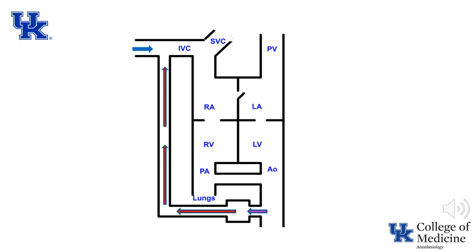Blood from the umbilical vein enters the inferior vena cava, where it joins venous blood from the lower extremities, resulting in a decrease in oxygenation. Blood from the inferior vena cava enters the right atrium, where it is preferentially directed through the foramen ovale into the left atrium. Because there is very little blood flow through the lungs, there is a minimal reduction in oxygenation when blood flowing through the foramen ovale mixes with blood from the pulmonary veins. From the left atrium, blood enters the left ventricle and is pumped into the aorta.